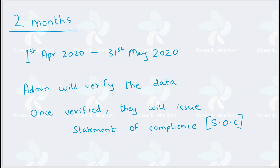After that, in the next 2 months — from 1st April 2020 to 31st May 2020 — the flag will verify the data. If the data and verification are correct, the flag will issue a Statement of Compliance to the company.